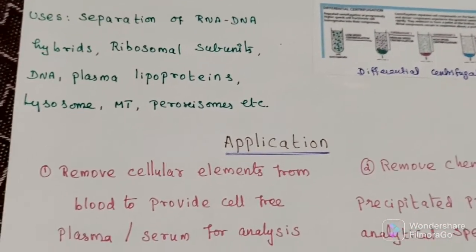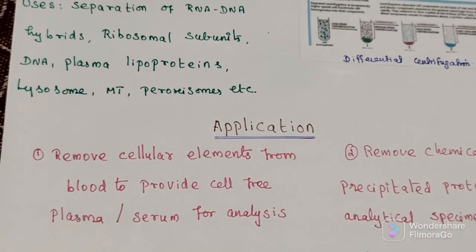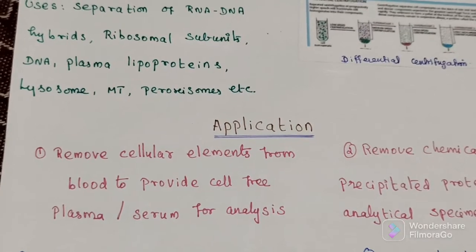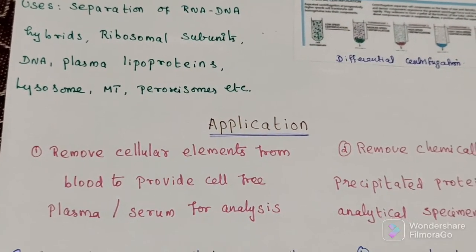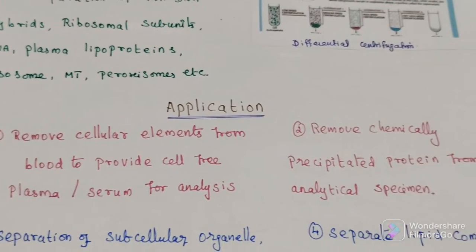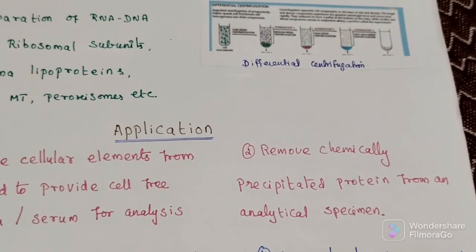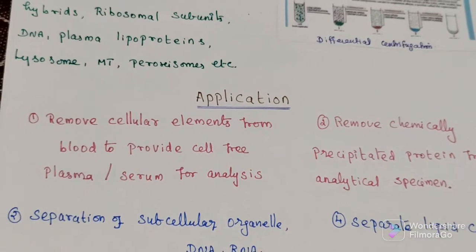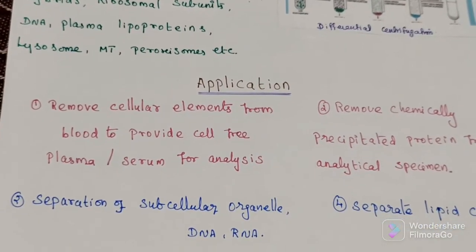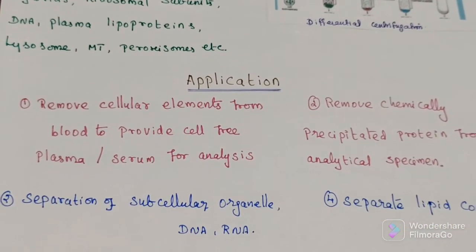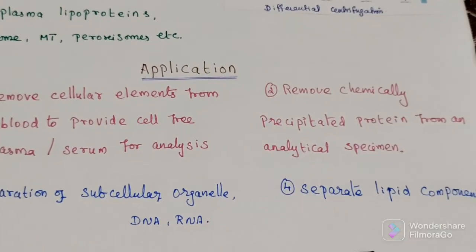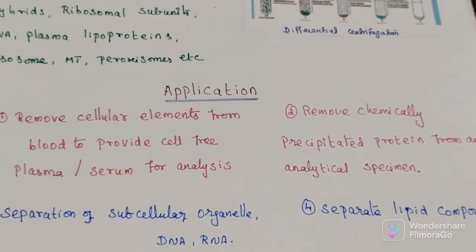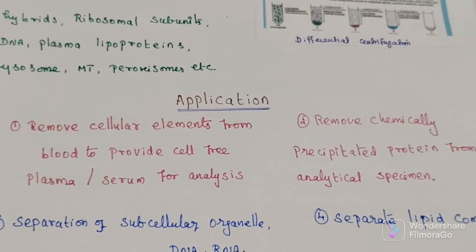The applications of centrifuge are various. First is removal of cellular elements from blood. Second is removal of chemically precipitated proteins. Third is separation of subcellular organelles, DNA, and RNA. Another application is to separate lipid components. These are the main applications of centrifuge.